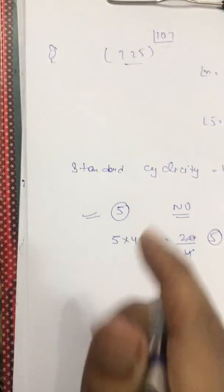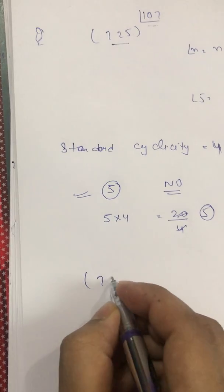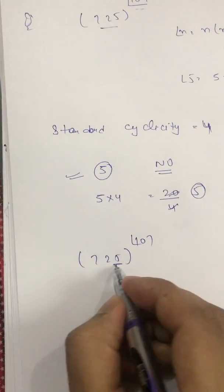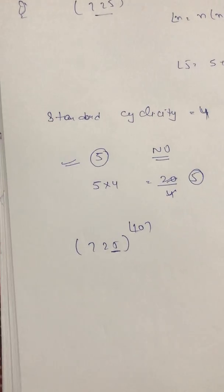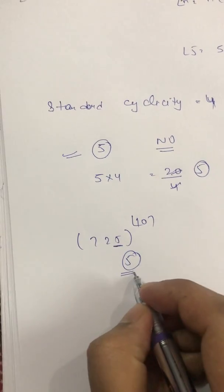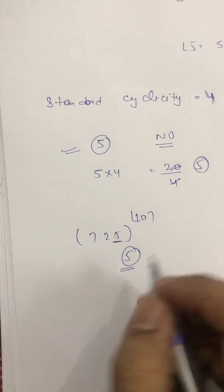Now, if I talk about the 725 raised to the power 107 factorial. Here in this, we are having 5 at a unit place, it is lying in the category of 0, 1, 5 and 6. Answer will obvious that will be irrespective of any value. That will be 5.